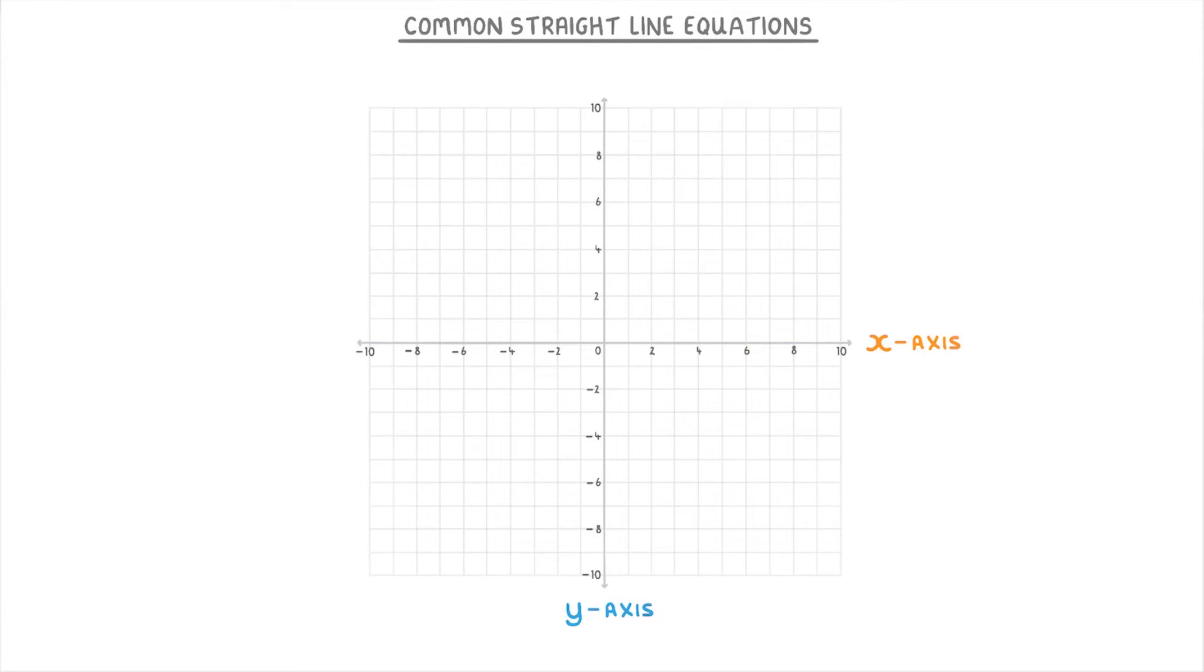The last type of line we need to look at are diagonal lines, like this one. If you pick any point along this line, you'll find that the x-coordinate is always the same as the y-coordinate. For example here, x is 6, and y is also 6.